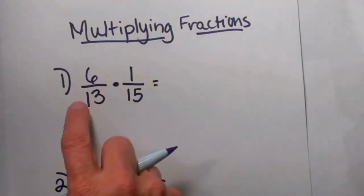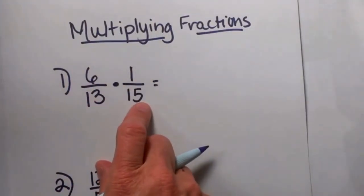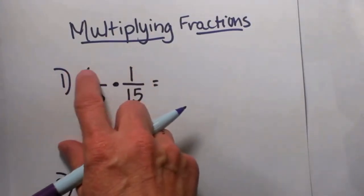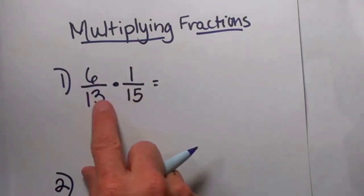Fractions. What you do is multiply the numerators together and the denominators together, but before you do that you want to look for common factors. So I am looking for any common factor in the numerator with any common factor in the denominator.